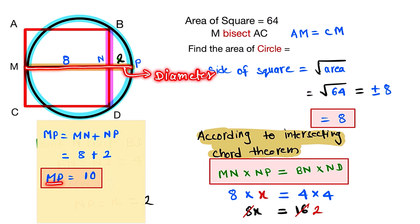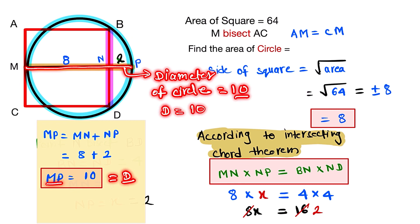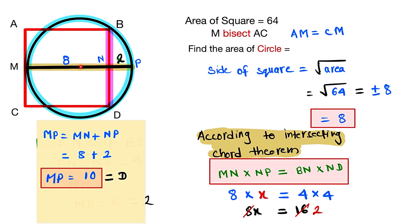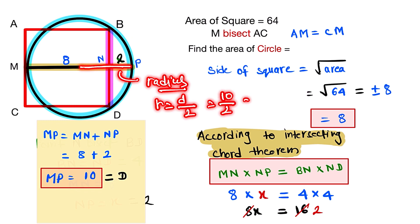MP is the diameter of the circle. We can find the radius of the circle by dividing the diameter by 2: 10 divided by 2. The value of the diameter is 10, so the value of the radius is equal to 10 by 2, which is equal to 5. So the radius is equal to 5 units.